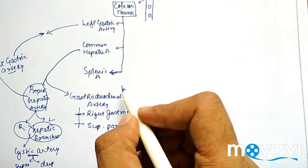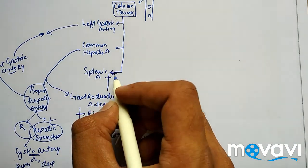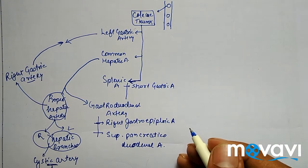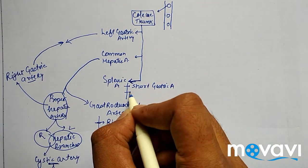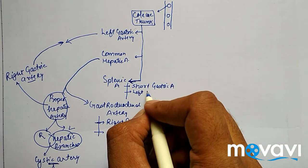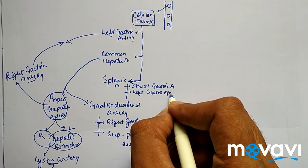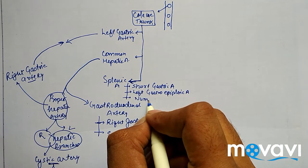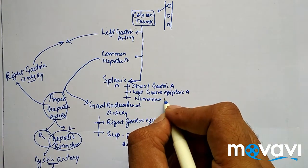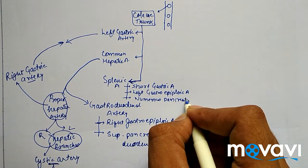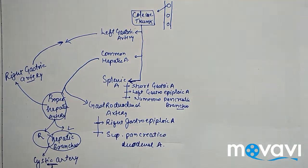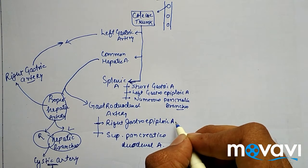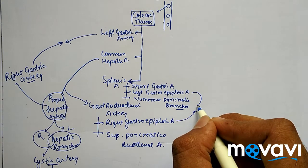The third branch of the celiac trunk is the splenic artery. The splenic artery itself has three branches. The first branch is the short gastric artery, the second branch is the left gastroepiploic artery, and the third are the numerous pancreatic branches that arise from the splenic artery. Remember that the right gastroepiploic artery anastomoses with the left gastroepiploic artery.